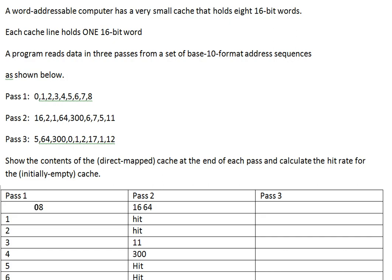Pass three. Five — another hit. Five has been good for us. 64 — that's a hit. By the way, the 16 is gone; it only holds one word at a time. 64 is the contents there, so that's a hit. 300 — hit. Zero. One — hit. Two — hit.